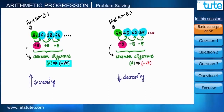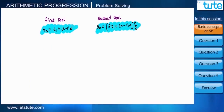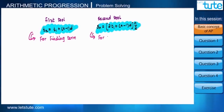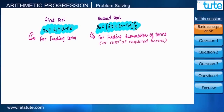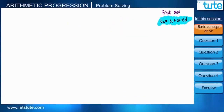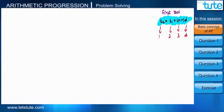Previously we also learned two basic tools: one for obtaining any term of the sequence, and the other for calculating the summation of all the terms. In this session we will focus on the first formula only. If we notice, there are a total of four parameters: t1, d, n, and tn.